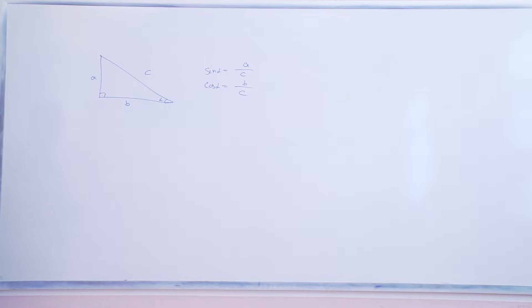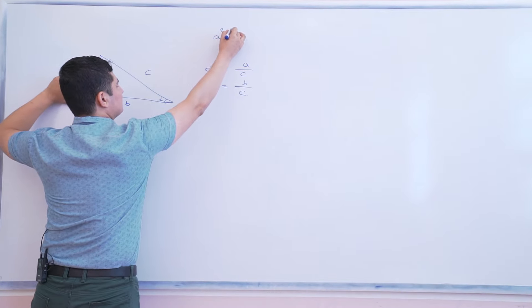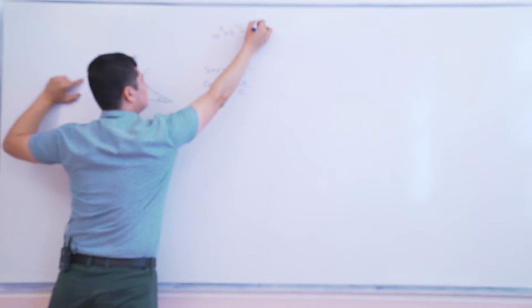And we know the Pythagorean theorem. A squared plus B squared equals C squared.